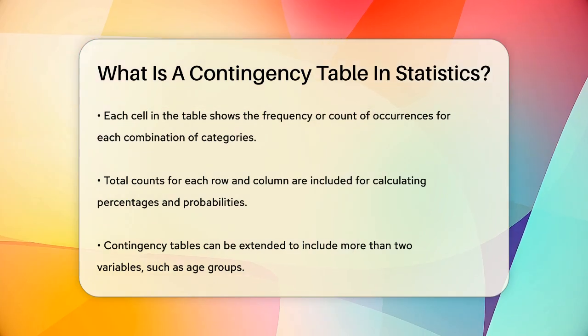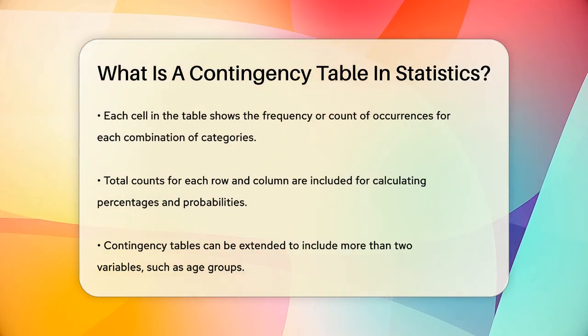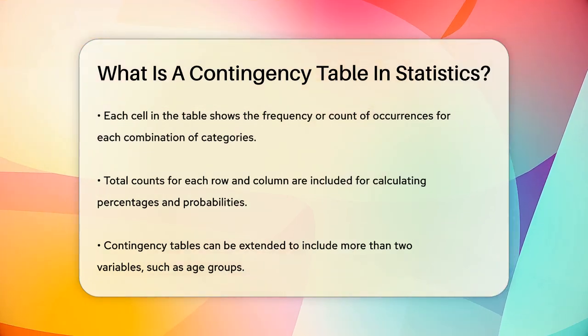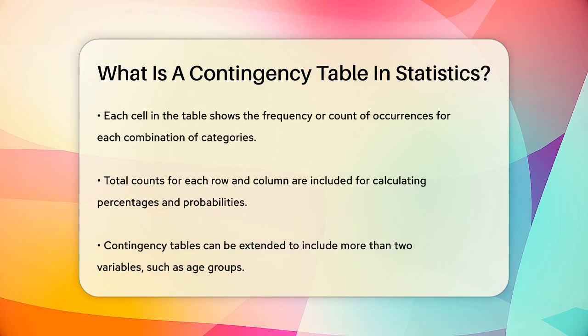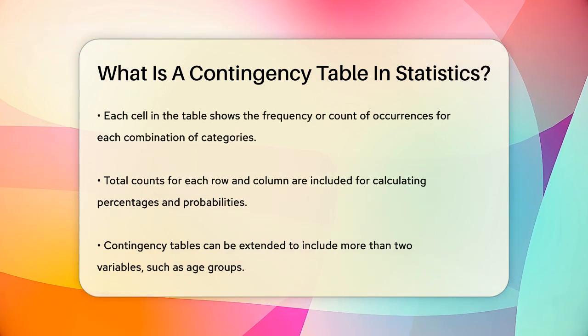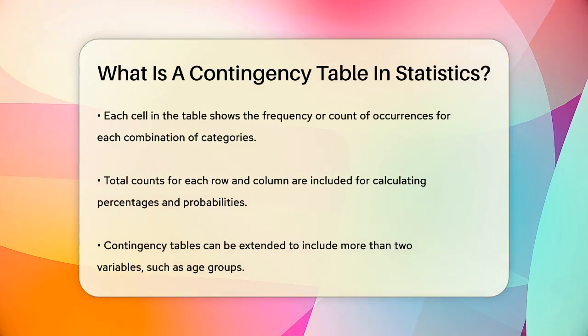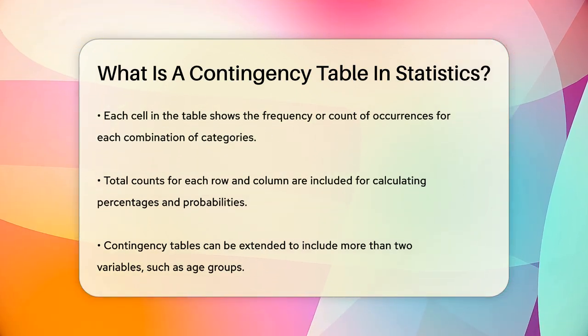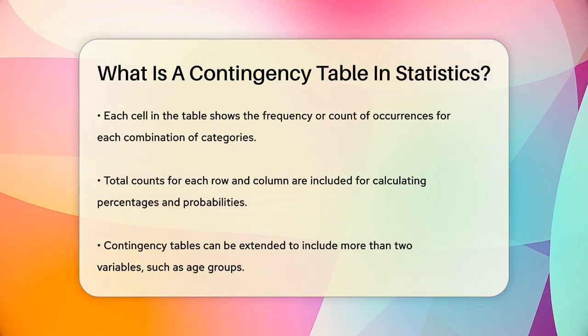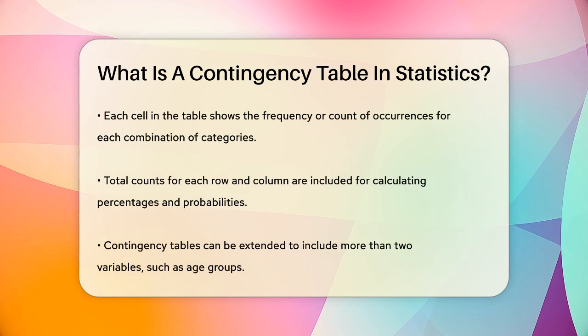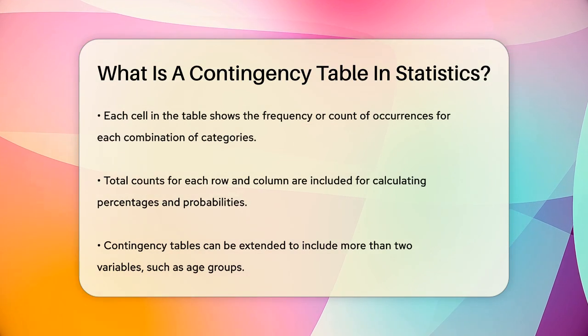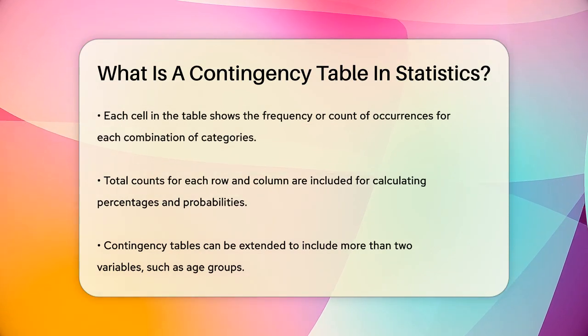These tables are not limited to just two variables. You can have three-way or even more complex contingency tables if you need to analyze additional variables, such as age groups or other categories.